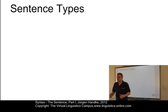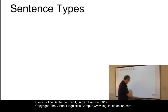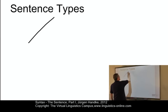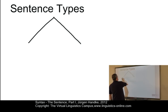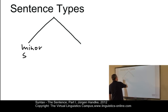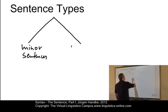What sort of sentence types are there? In general, we define two sentence types: so-called minor sentences and major sentences.